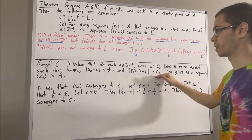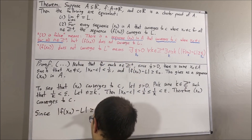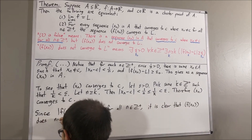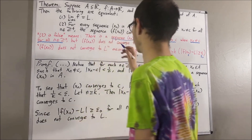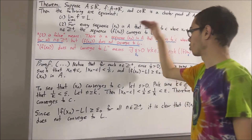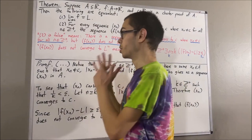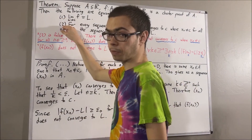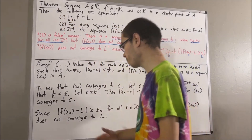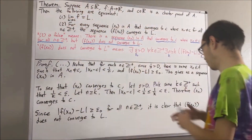This key fact shows that F of Xn must not converge to L. So that property holds. We have shown all the required properties, which proves that two is false. So we have proven if one is false then two is false. By the contrapositive, that's equivalent to proving if two is true then one is true. And so we have proven that one and two are equivalent. This completes the proof.